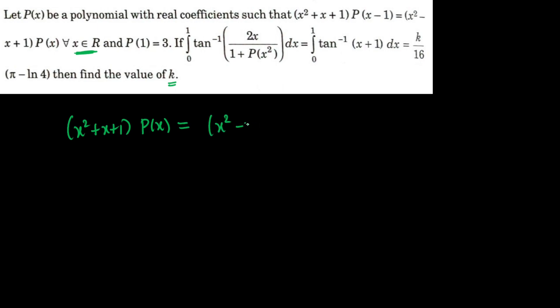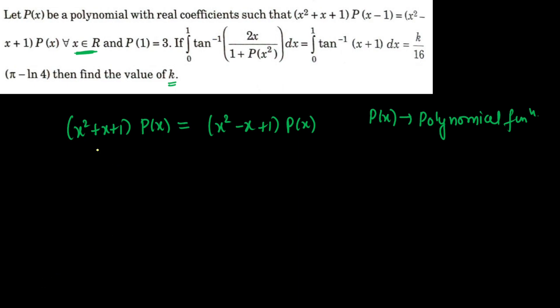Let's tackle the first part. We have (x²+x+1)·P(x-1) = (x²-x+1)·P(x). Notice for the quadratic x²+x+1: A is positive and the discriminant D is less than 0, so it is an upward parabola with no real factors. Similarly, x²-x+1 also has A positive and D negative, so it has no real factors either.